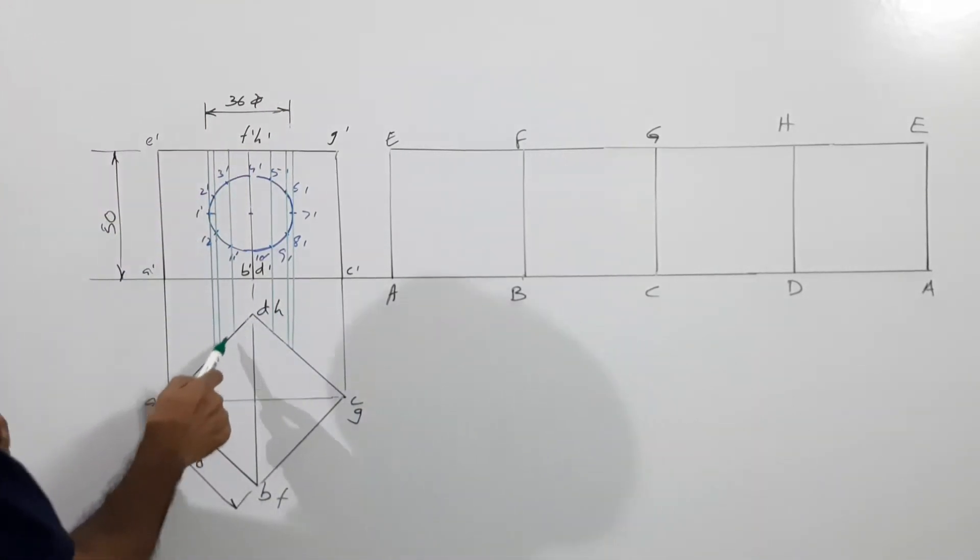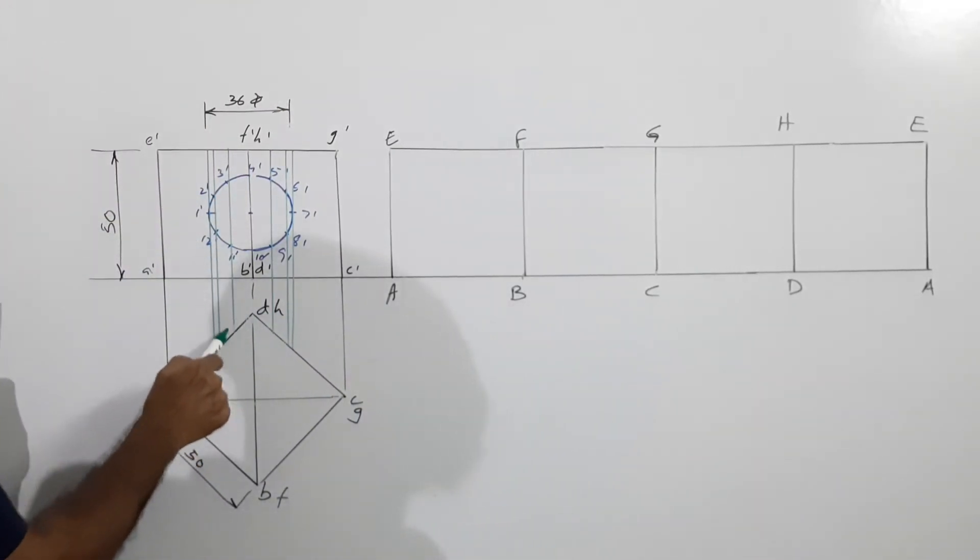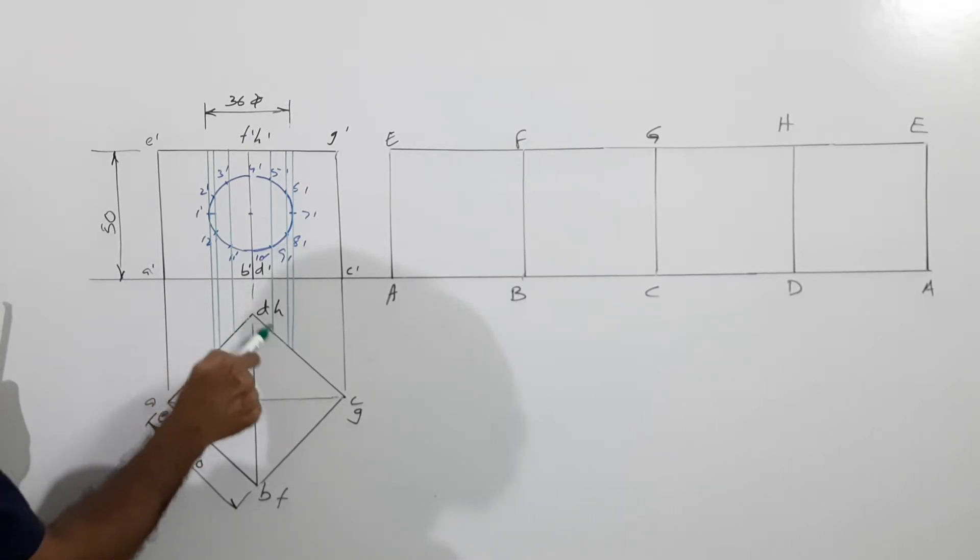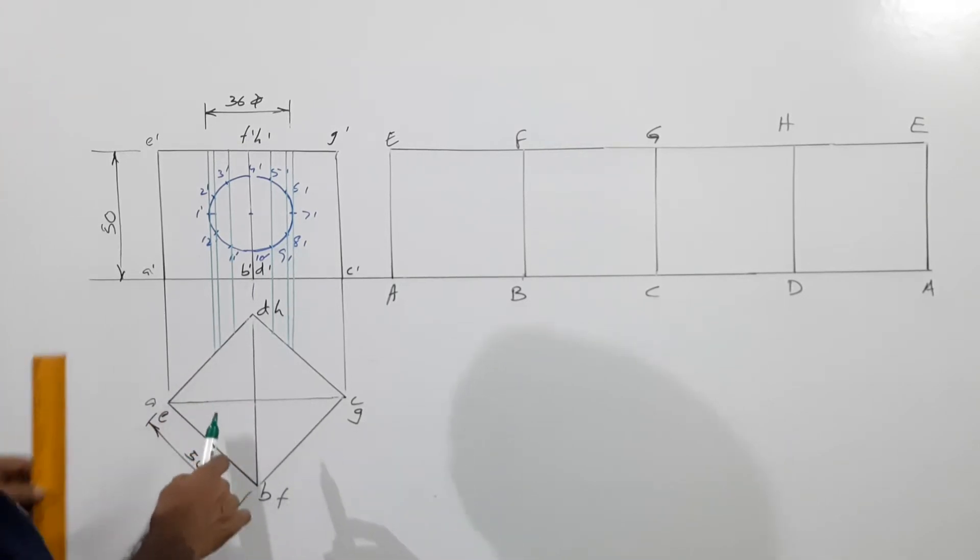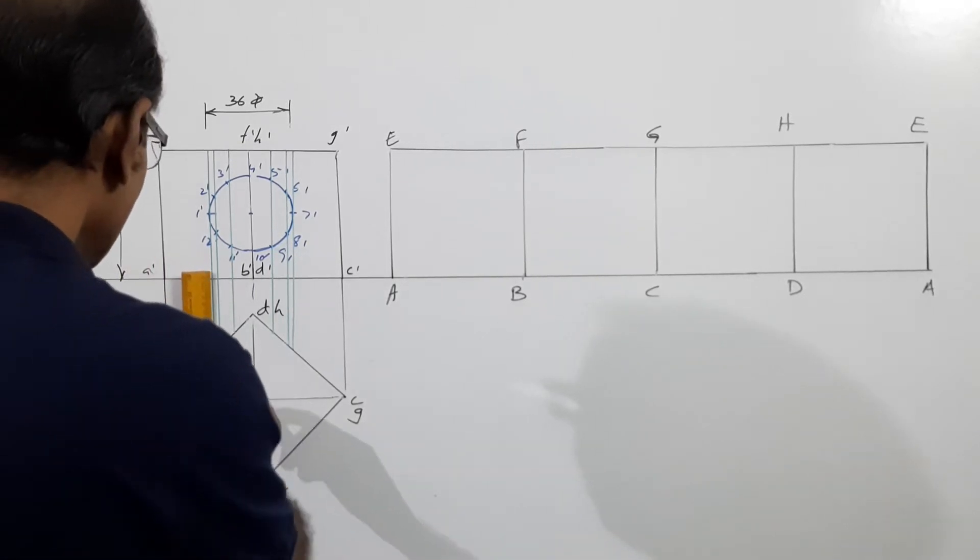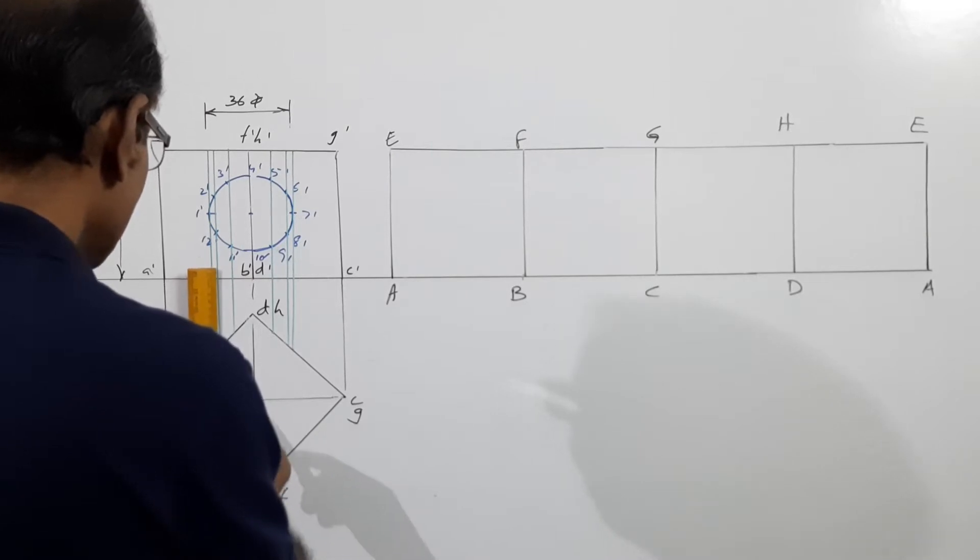Actually, drawing them on one side is sufficient because this distance is equal to this distance. You need not draw on this side also. It's the same thing. If you want you can reproduce them and extend them, but it's not necessary actually.